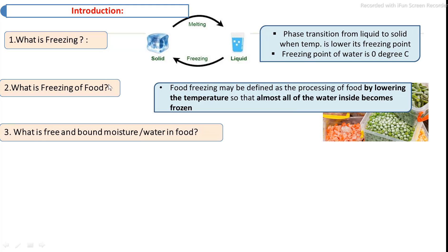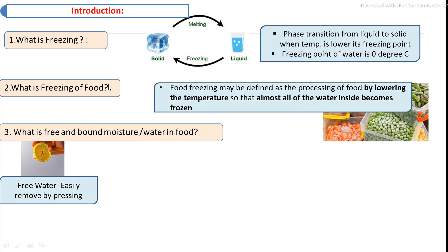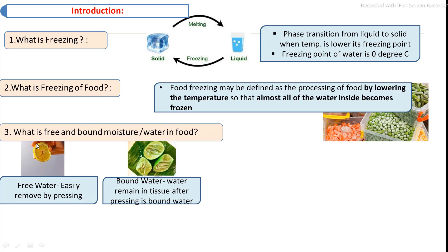Food contains moisture in two forms: free moisture and bound moisture. When both free and bound moisture are converted to ice, it is called freezing of the food product. The freezing point of pure water is zero degrees Celsius, but the freezing point of food is lower than zero degrees Celsius, depending on the composition of the food.